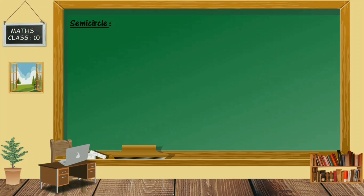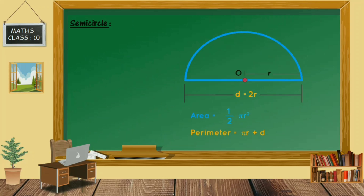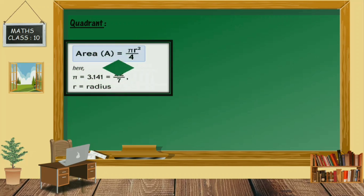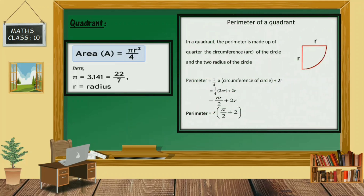Next is the semicircle. The area of a semicircle is half of the circle, equal to (1/2)πR². The perimeter of a semicircle is πR + D, or πR + 2R. Next is the quadrant: a quadrant is one fourth of a circle, so its area equals πR²/4, and the perimeter of a quadrant equals πR/2 + 2R, or R×(π/2 + 2).